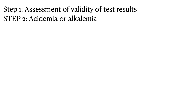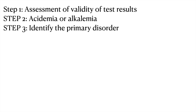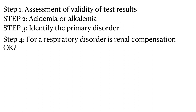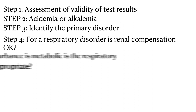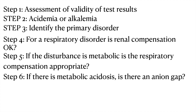To summarize: Step 1 — assess the validity of ABG results. Step 2 — determine whether there is acidemia or alkalemia. Step 3 — identify the primary disorder (metabolic or respiratory). Step 4 — if respiratory, find the renal compensation. Step 5 — if metabolic, find the respiratory compensation and assess if it is appropriate. Step 6 — if metabolic acidosis, calculate the anion gap. Step 7 — calculate the delta ratio to identify any additional metabolic disorder such as normal anion gap acidosis alongside high anion gap metabolic acidosis.